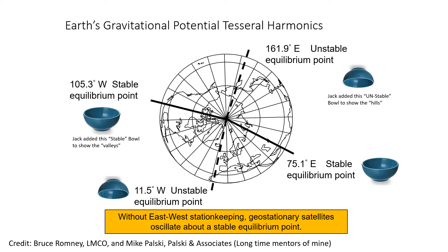Thanks to my friends Bruce Romney of Lockheed and Mike Powski of Powski & Associates, they provided an illustration to which I added the stable and unstable bowls. There are two stable equilibrium points where the bowl is right-side up — like a valley. If you're not doing east-west station keeping, you will oscillate in that bowl about these stable points. At an unstable point — the hill — you'll come off the top and head toward the stable point. There are situations where you can go back and forth over an 800-day period. Stable and unstable points both exist.